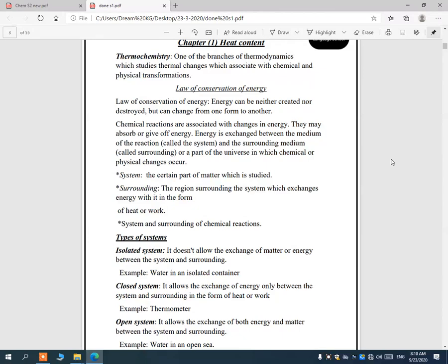System and surroundings of chemical reactions. We have three types of systems. The first one is an isolated system which doesn't allow the exchange of matter or energy, like for example water in an isolated container. Number two, closed system. It allows the exchange of energy only between the system and the surroundings, like for example a medical thermometer.